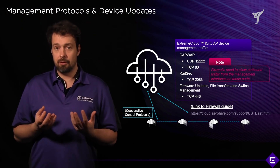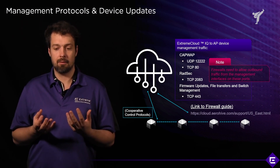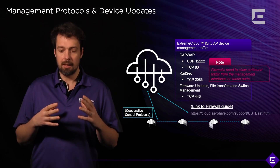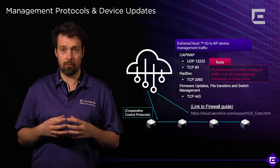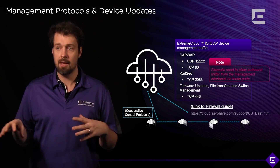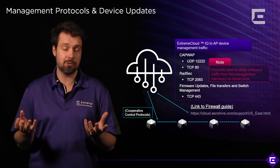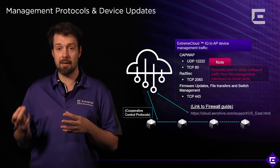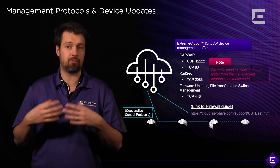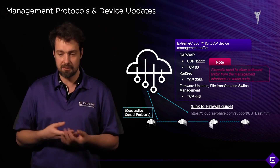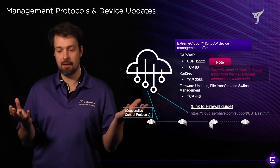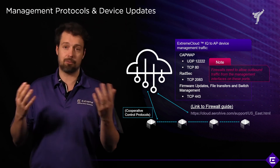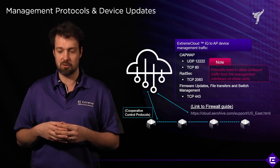Let's look at some of the protocols used in an Extreme Cloud IQ deployment. We talked about cooperative control protocols — those are all done locally between the access points. Since it's done on a layer 2 subnet or across wireless communication using beacon frames, there's no need to configure anything in terms of firewalls. In case you were wondering, the cooperative control protocols use port 3000 to communicate with one another, if for some reason you have a layer 2 firewall between those access points.